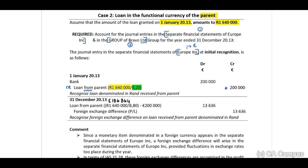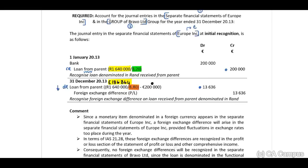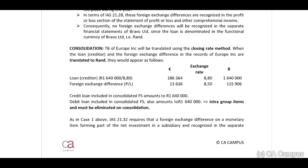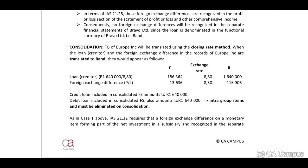At year end, the rate is 8.80, which results in a Euro equivalent of 186,364. The initial amount was 200,000 Euro, so we will debit and decrease the loan by 13,636.